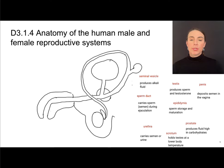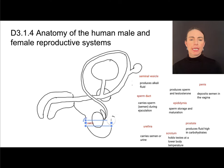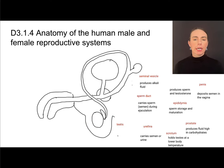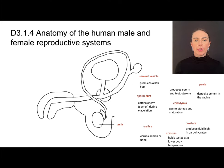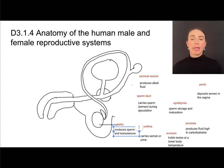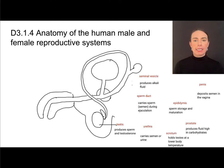Let's add some labels and functions. The testes — that's the one we drew first. The testes is singular, testes is plural. This one testes produces both sperm and testosterone. The epididymis is the site of sperm maturation and storage of sperm, holding it until ejaculation.